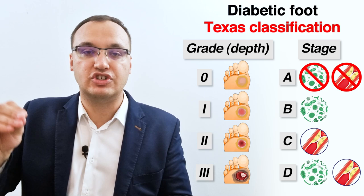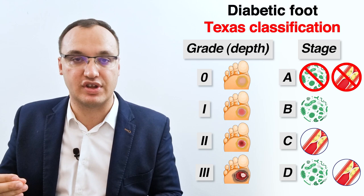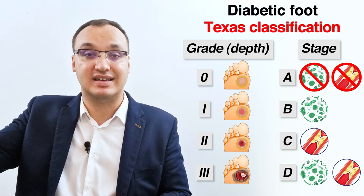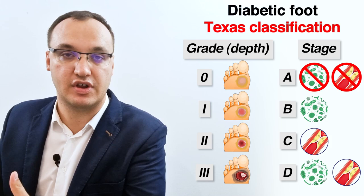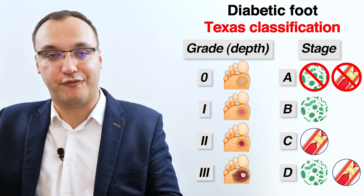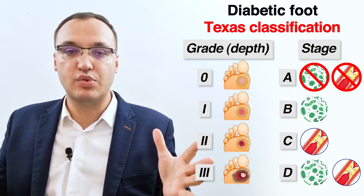Which is more severe — infection or peripheral artery disease? Depending on the staging, peripheral artery disease is more severe than infection. And of course, if we have both, that is the most severe. We have four grades and four stages, and we can combine these to make a complete classification system.